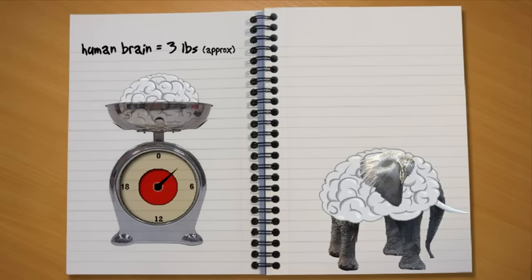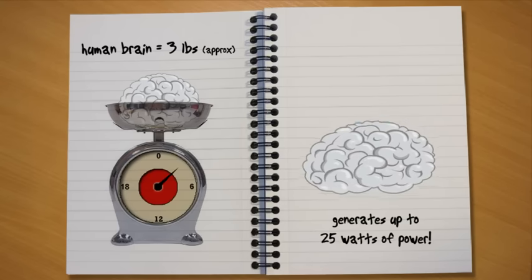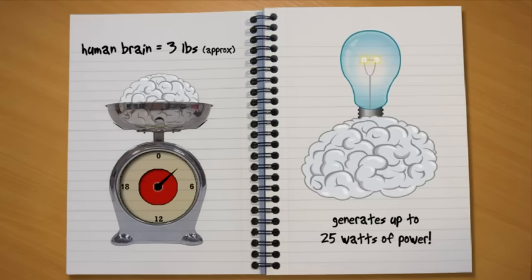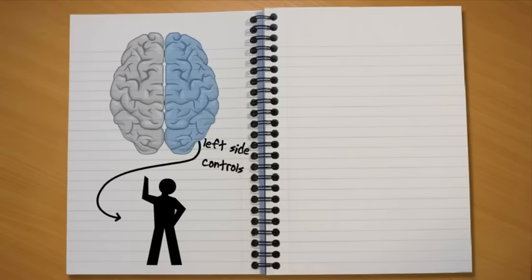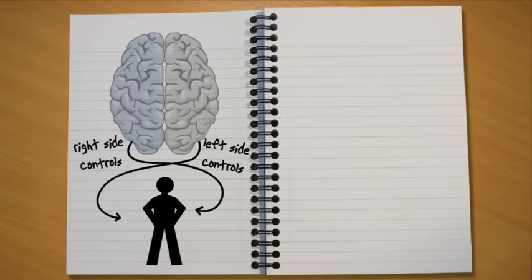While you're awake, your brain generates up to 25 watts of power, enough to illuminate a lightbulb. The biggest part of your brain is the cerebrum and it has two halves, one on either side of your head. Scientists know that the left side of your brain controls the right side of your body and the right side of your brain controls the left side of your body.